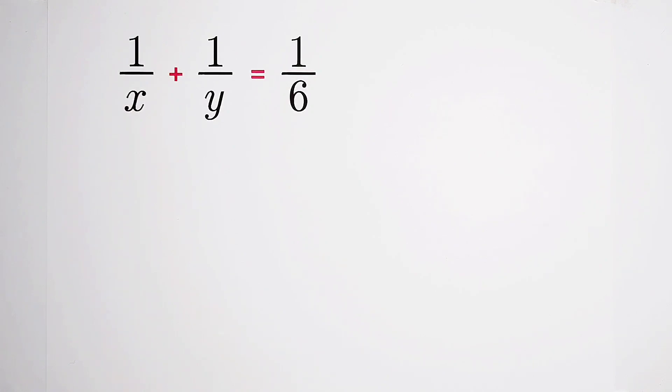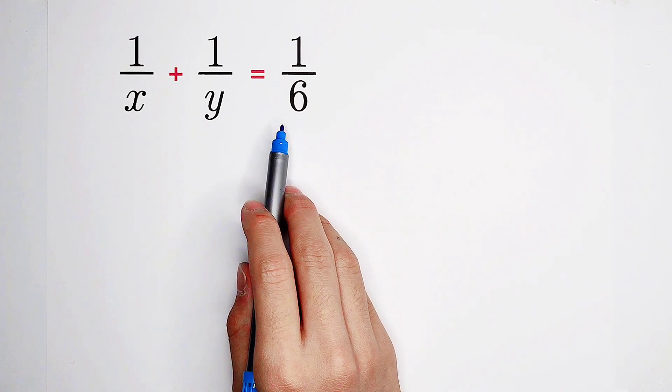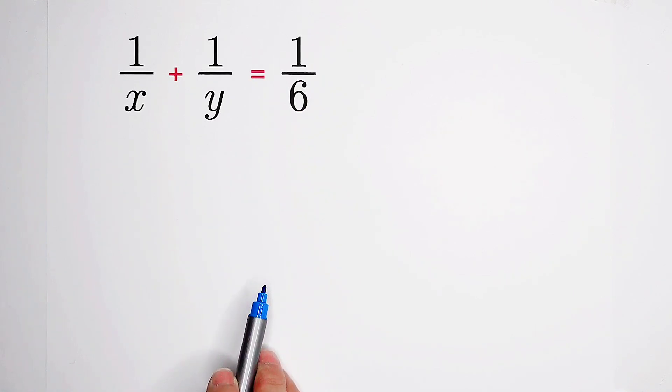Solve for the positive integers x and y such that 1 over x plus 1 over y equals 1 over 6. Oh my god, it's so horrible.